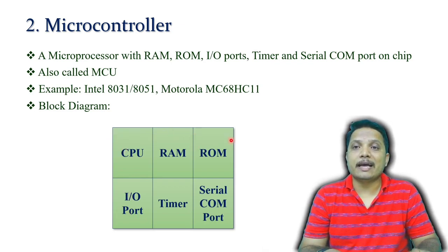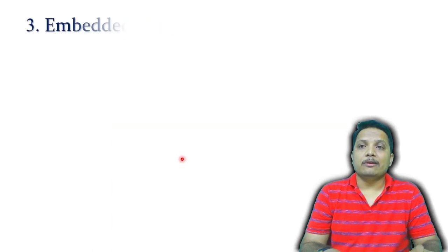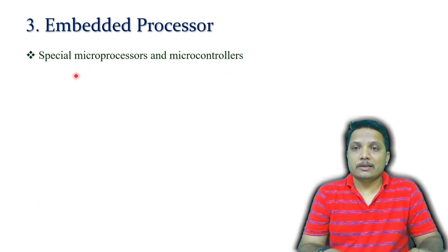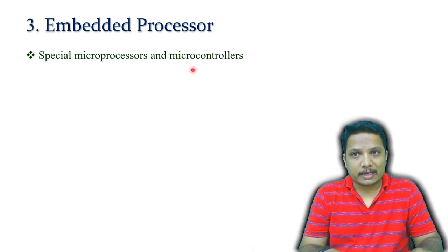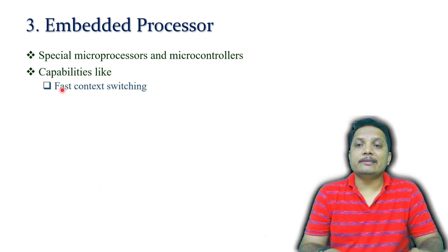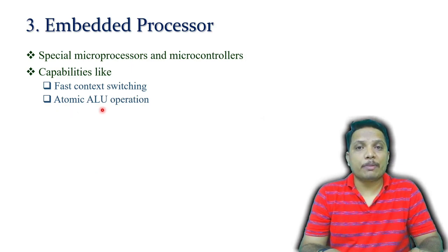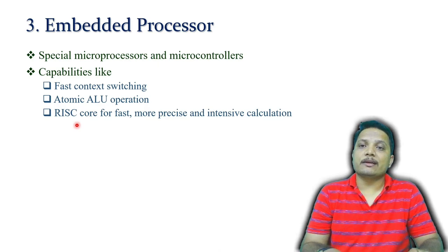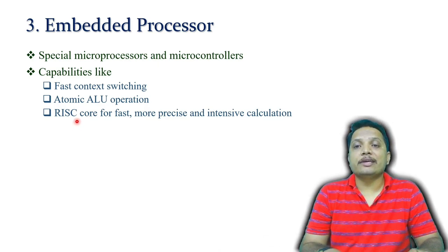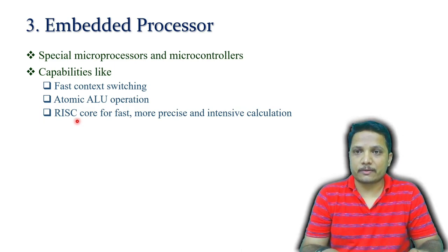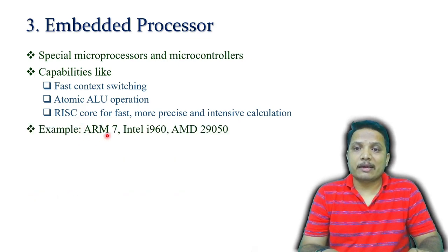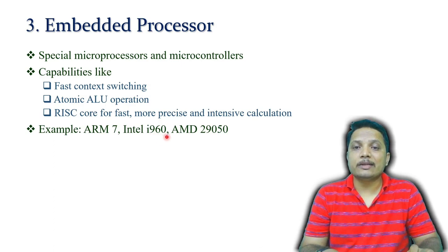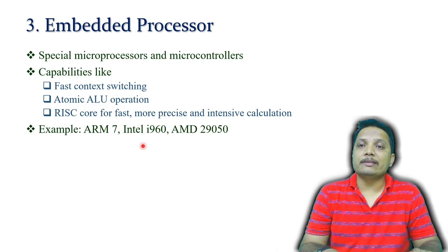Now let us see the embedded processor. These are special microprocessors or microcontrollers. They have capabilities like faster context switching, atomic ALU operation, and RISC core for fast and more precise, compute-intensive calculations. Embedded processors have faster application execution compared to normal microcontrollers and microprocessors. Examples include ARM7, Intel i960, and AMD 29050.